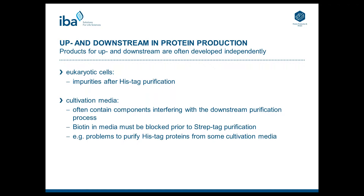One problem why we often have difficulties purifying proteins from mammalian supernatants is that products for upstream and downstream are developed independently. For example, a provider may offer an expression system with very good protein yields. But once it comes to purification, only a minor part of the protein can be purified from the supernatant. We see expressions of grams per liter measured in Octet and ELISA systems, but once you have purified your protein, you may only have a few milligrams left.